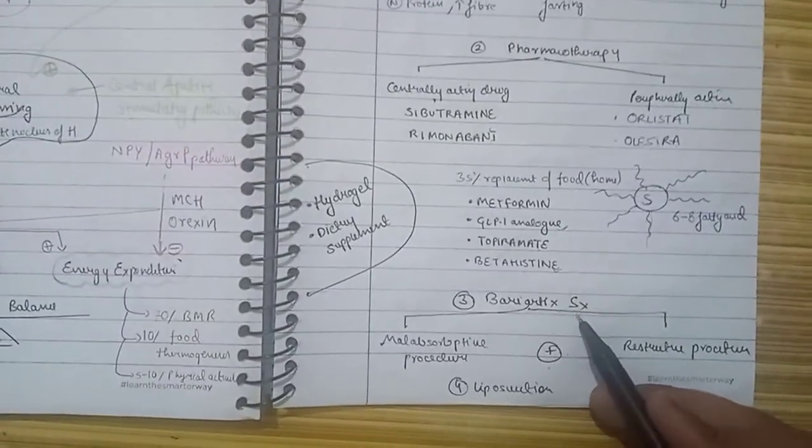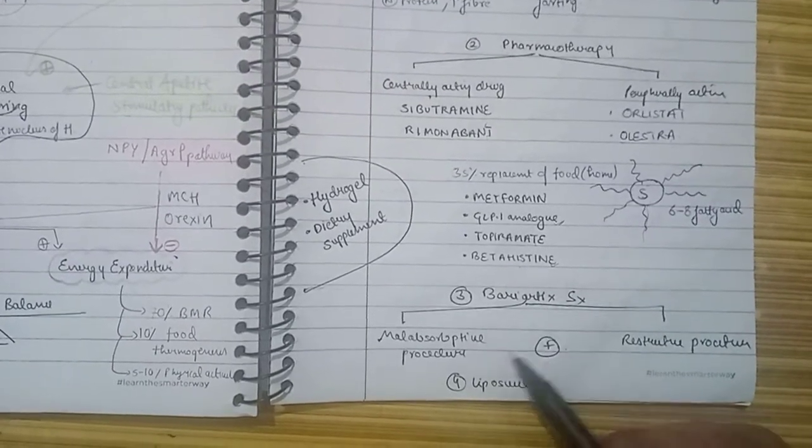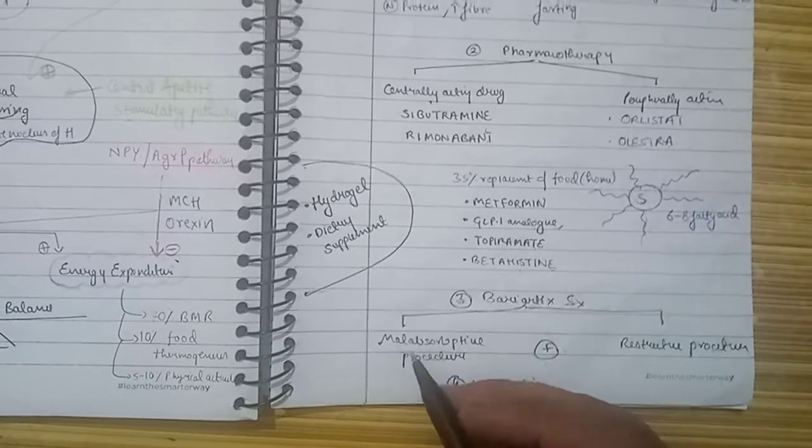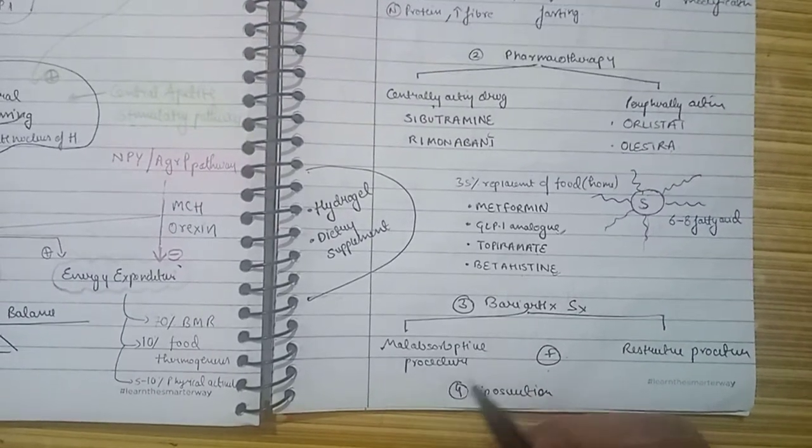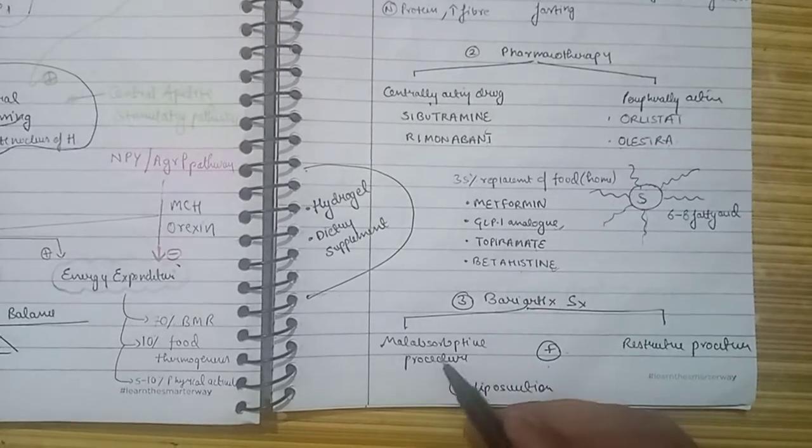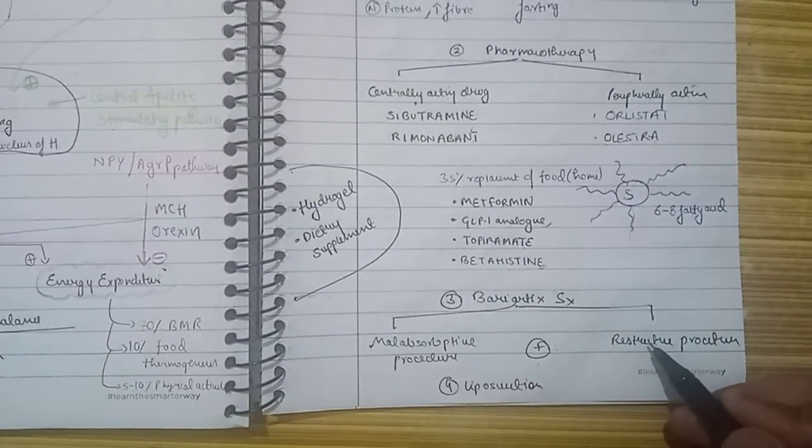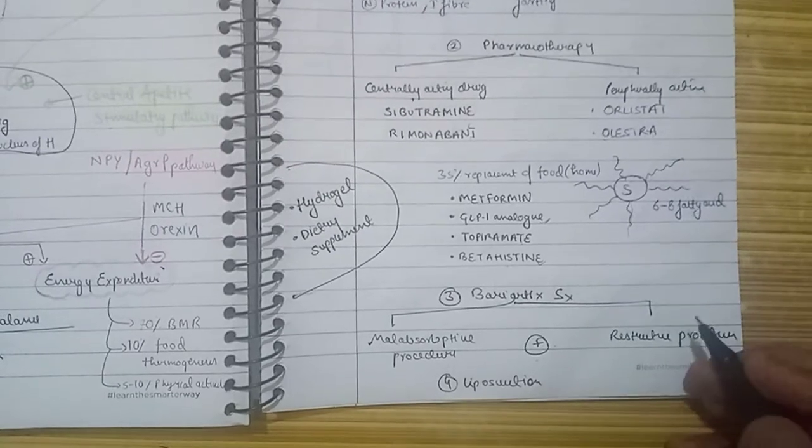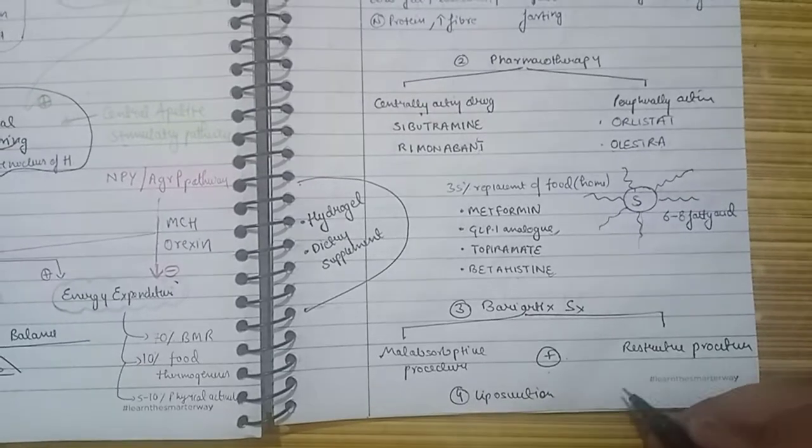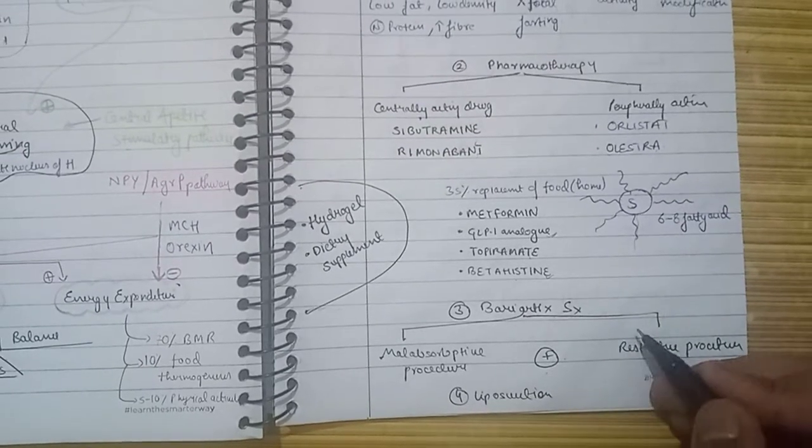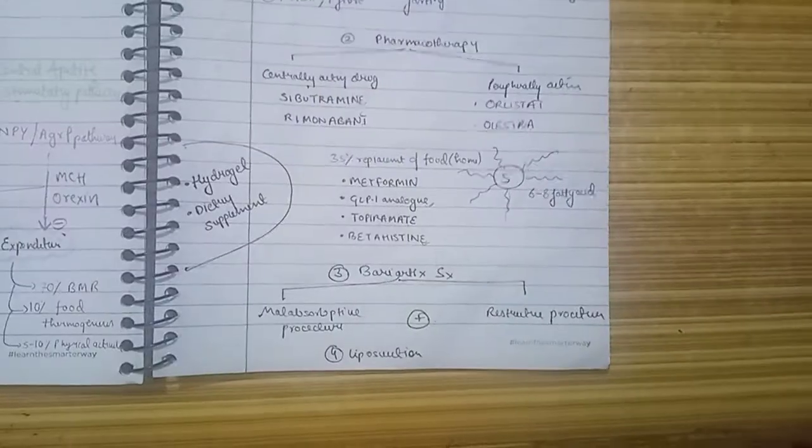The third option is bariatric surgery. There is a separate video for this, but here's a brief overview. We can have malabsorptive procedures where we decrease the length of the small intestine so nutrient absorption is less, or restrictive procedures where we decrease the volume capacity of the stomach or the absorbing surface so satiety is reached early. We can also combine both.